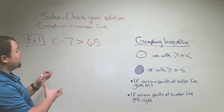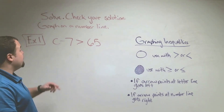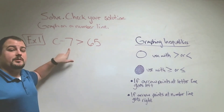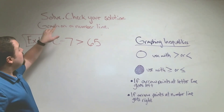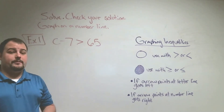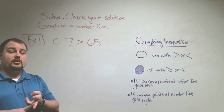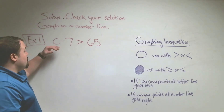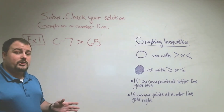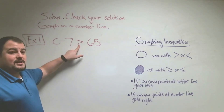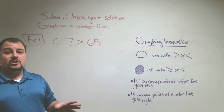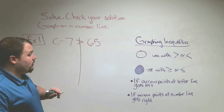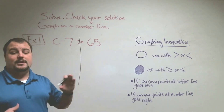In Example 1, we're going to be solving C minus 7 is greater than 65. Our directions say we're going to solve this problem like we normally would solve a regular equation. We're going to check our solution and graph it on a number line — three things: solve it, check it, and graph it on a number line. We're working with inequalities now, so instead of an equal sign we have an inequality sign. We draw a line through the inequality sign, which separates the left side from the right side of our problem.